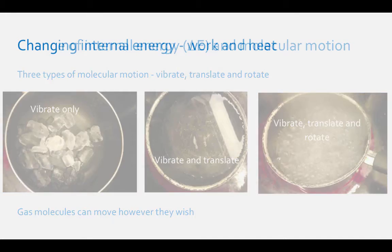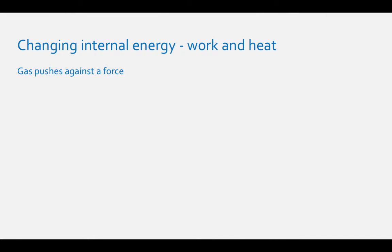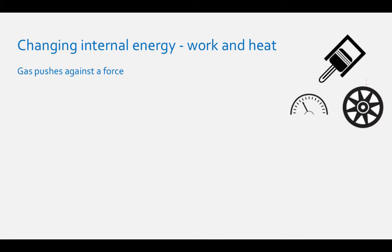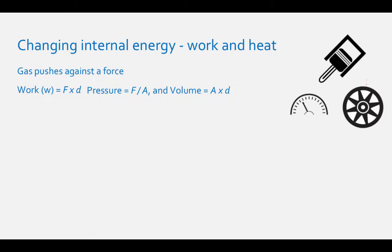You can change internal energy two different ways. The first way is when a gas pushes against something. A classic example is a car piston. When gasoline combusts in your engine, it produces a gas which pushes against the pistons, causing your engine to run. We define this as work, represented by a lowercase w, defined as the force an object asserts through a distance. In the case of gas expansion, pressure equals force divided by area, and volume equals area times distance. Therefore, expansion work equals negative pressure times volume.